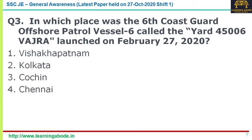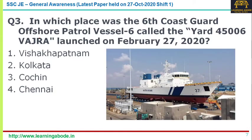Third question: in which place was the sixth Coast Guard Offshore Patrol Vessel, Yard 45006 Vajra, launched on February 27th, 2020? These Offshore Patrol Vessels (OPVs) are long-range surface ships capable of coastal and offshore patrolling, used for policing maritime zones, surveillance, and stopping piracy and smuggling.